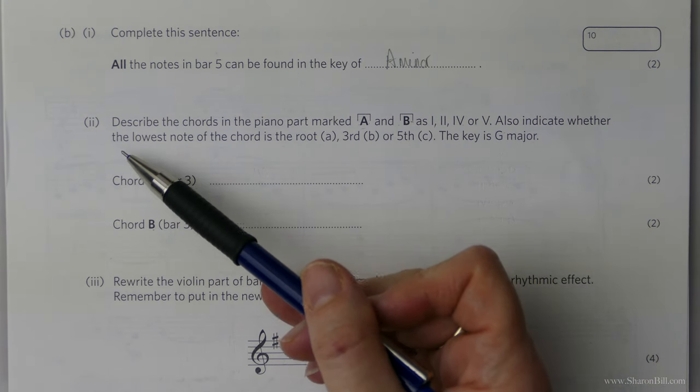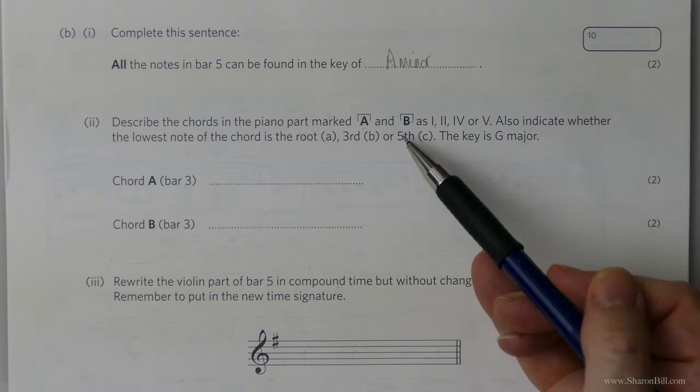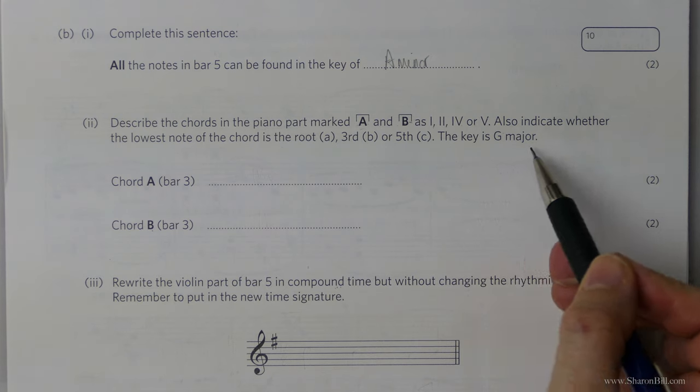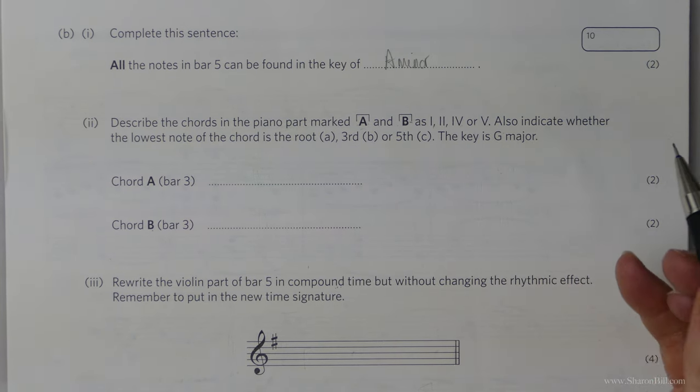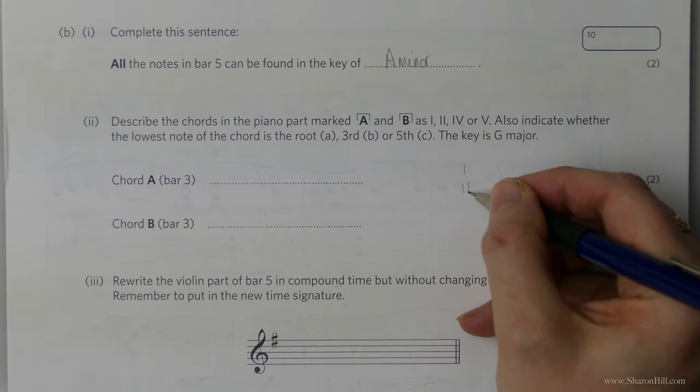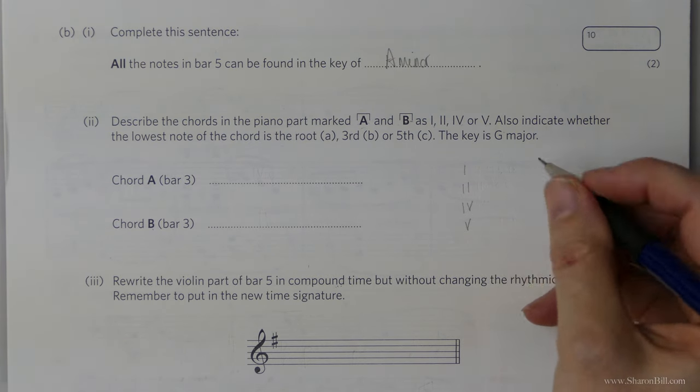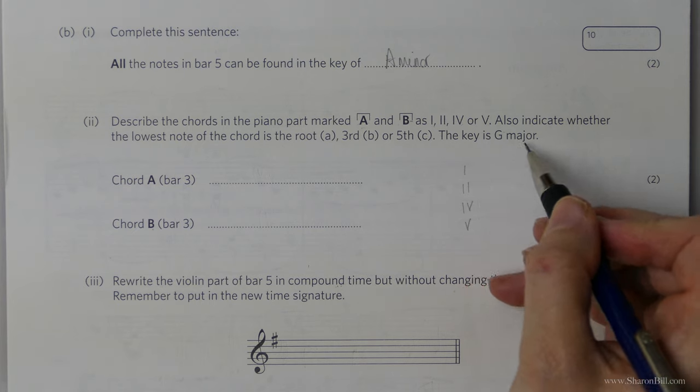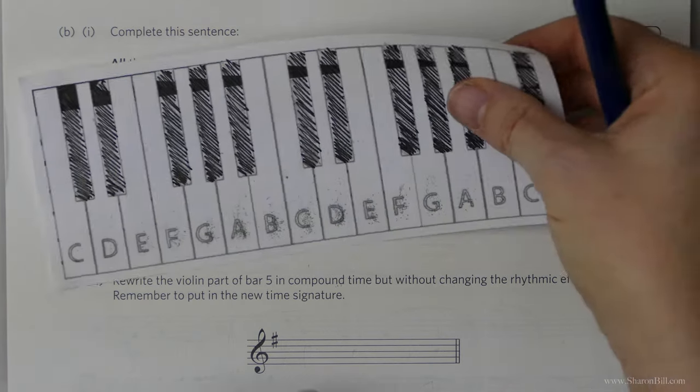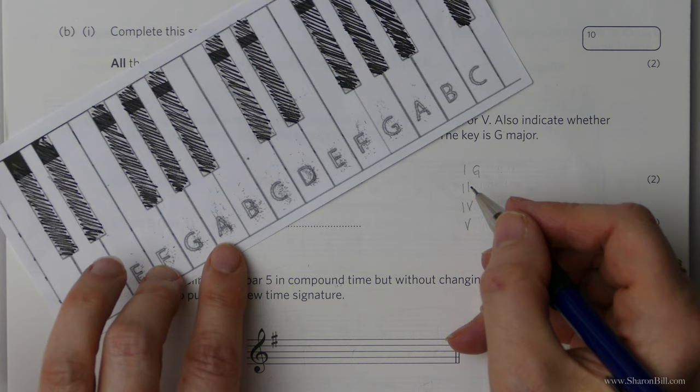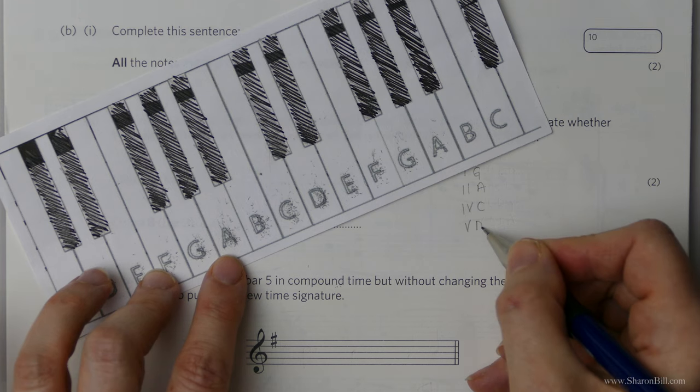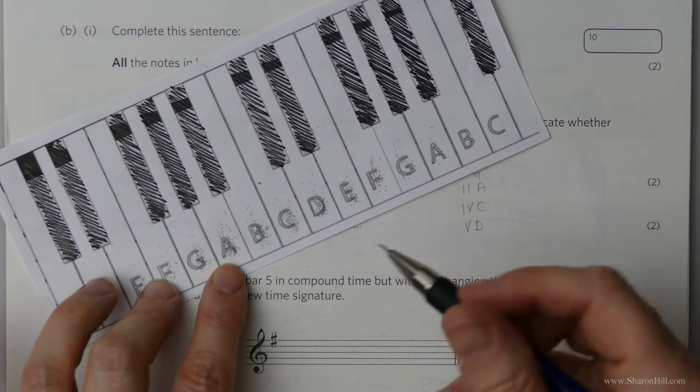And so moving on. The next question asks us to describe the chords in the piano part marked A and B. Helpfully we're told that we're in the key of G major. And we're looking to choose between these chords. So if we just map out the notes that we're going to be looking for. So chords one, two, four, and five. We're helpfully told that we're in the key of G major. So we know chord one is based upon G, the first note of the scale, the tonic. And then if we're counting upwards, chord two is A. Four is C. And five is based on note D.